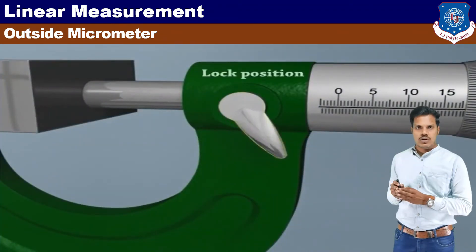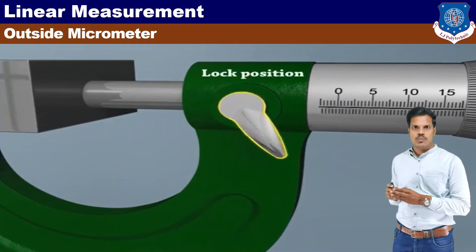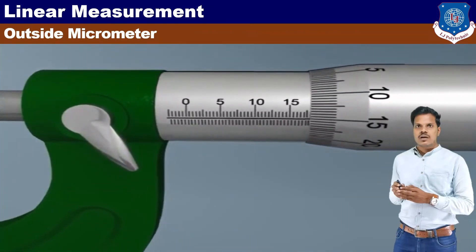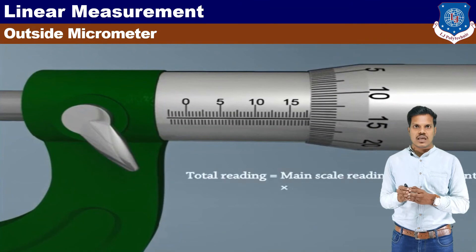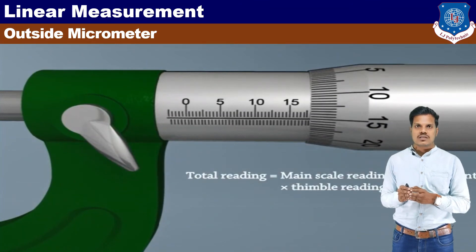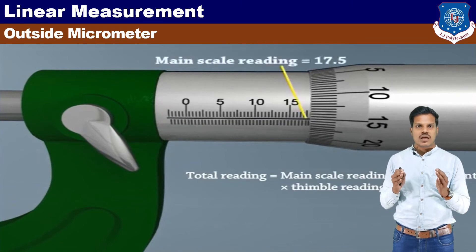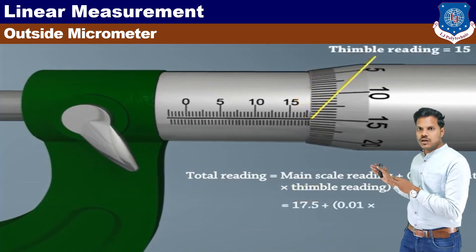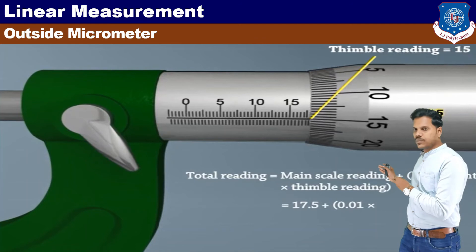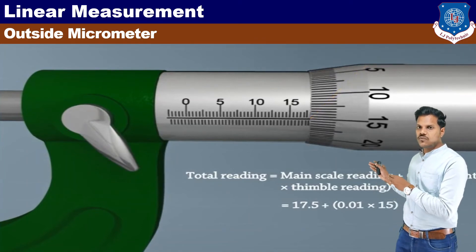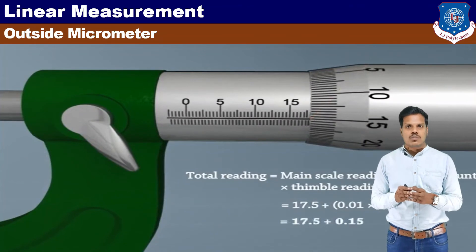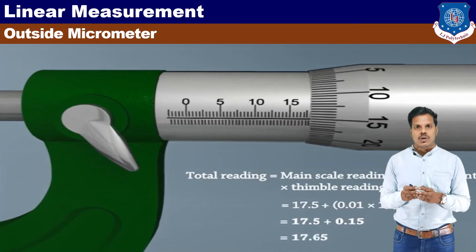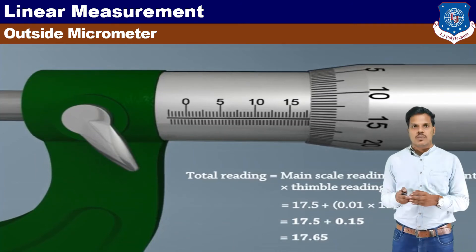This is the ratchet screw application. We lock the screw with the locking screw. Then we calculate the reading: main scale plus least count multiplied by vernier scale reading. The main scale reading is 17.5, plus least count 0.01, multiplied by circular scale reading of 15. So the total is 17.5 plus 0.15, that is equal to 17.65 mm. This is the calculation for the outside micrometer.